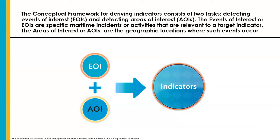These two together help extract the relevant data points from which we derive the indicator. To give a simple example, consider an indicator on the volume of traffic in the Port of Shanghai. The events of interest would include all activities that vessels do in ports, such as loading of cargo, refueling, and anchoring. Meanwhile, the area of interest would be the boundaries of the port. The ships that match this AOI-EOI profile will comprise the dataset that may then be summarized into an indicator.